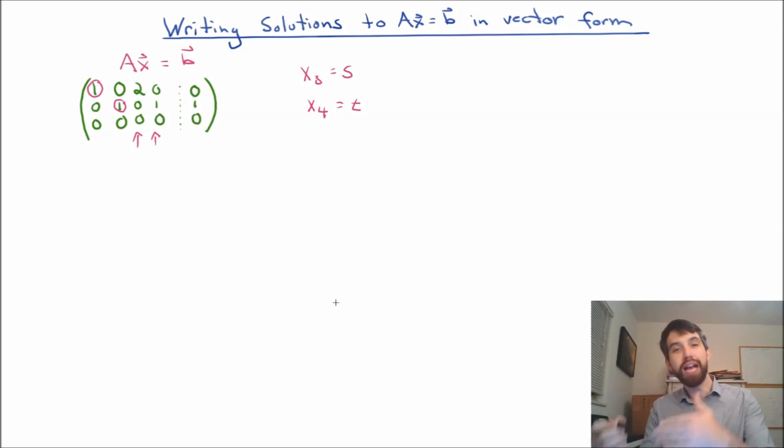And then I can figure out what x1 and x2 is in terms of S and T. So for instance, for x2, this is going to be 1, and then I know that I have this 1 here, and I'll sort of move that to the other side, and so this is going to give me 1 minus x4, but x4 was T, so 1 minus T.